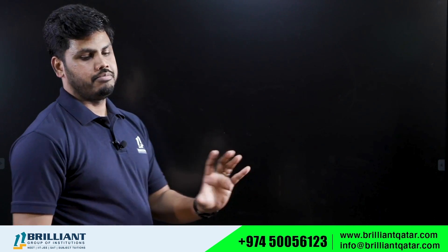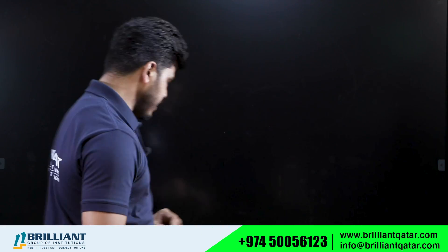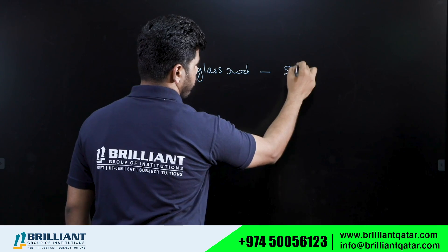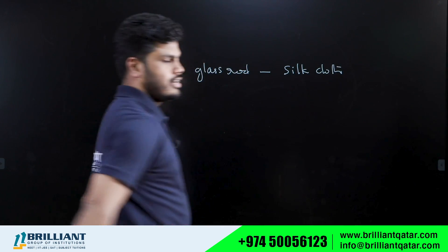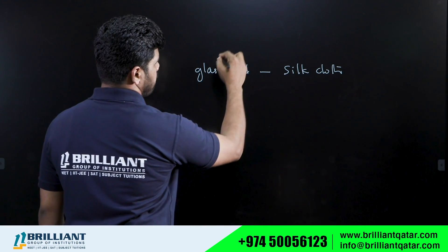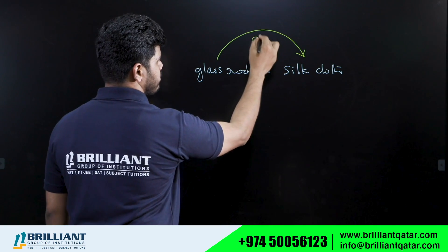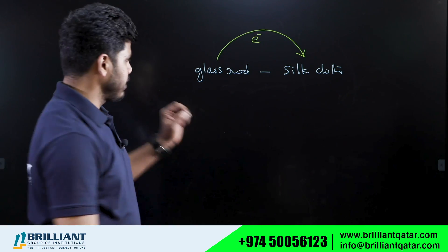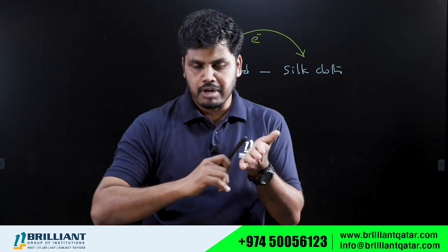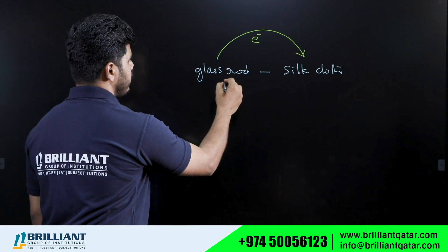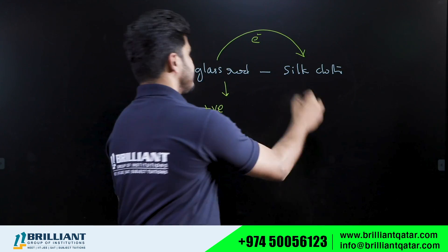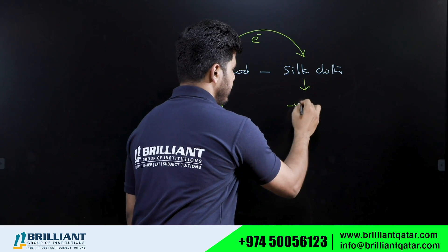Let me give some examples. If you take a glass rod and rub it with a silk cloth, it is observed that electrons are transferred from the glass rod to the silk cloth. Before rubbing, both the glass rod and silk cloth were electrically neutral. After rubbing, the glass rod is positively charged because it lost electrons — it has a deficiency of electrons — and the silk cloth gained electrons so it becomes negatively charged.